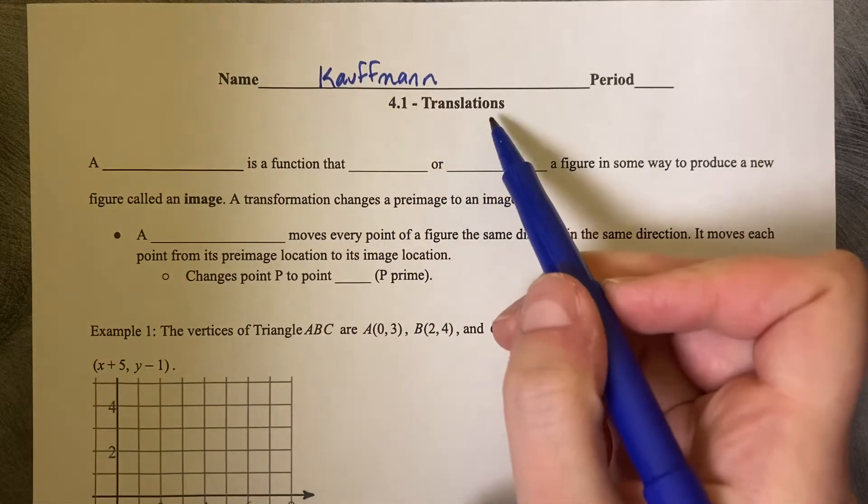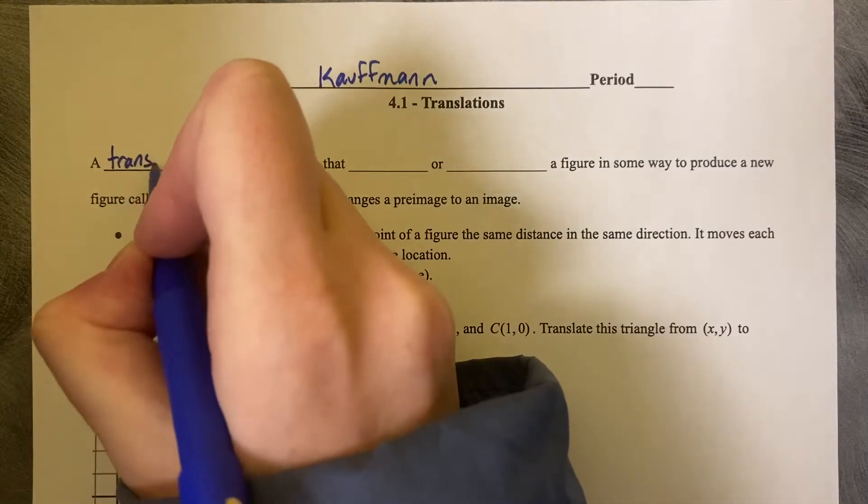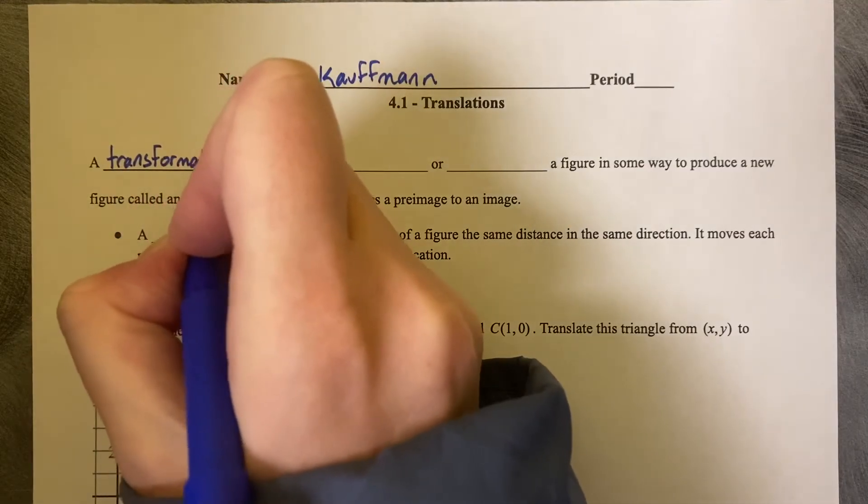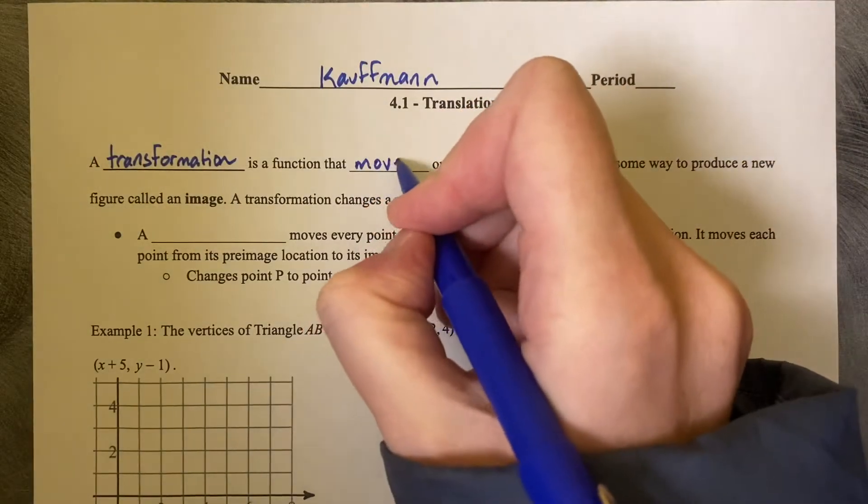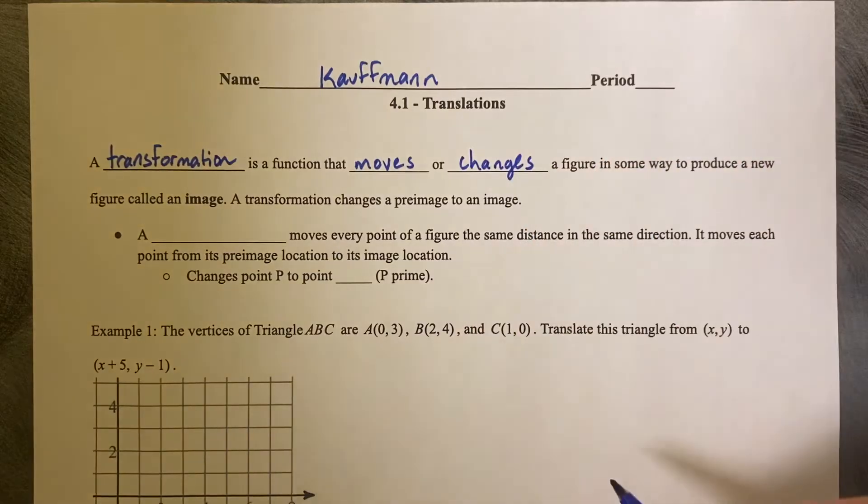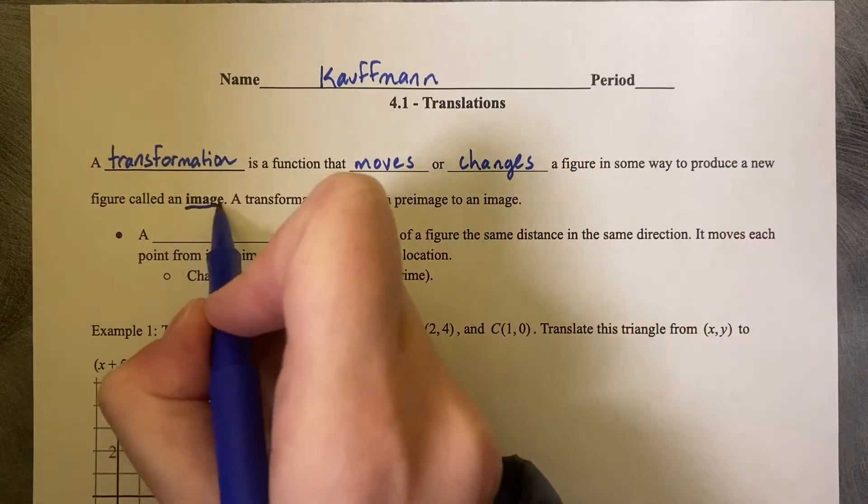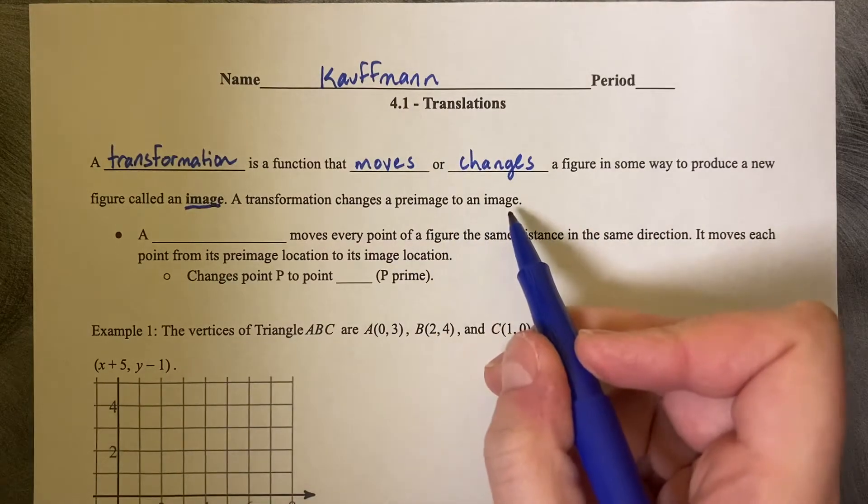4.1 Translations. A transformation is a function that moves or changes a figure in some way to produce a new figure called an image. A transformation changes a pre-image to an image.